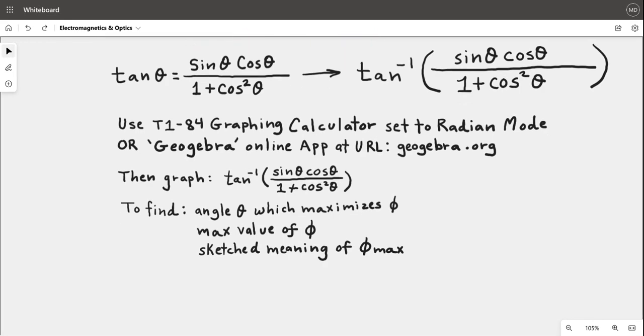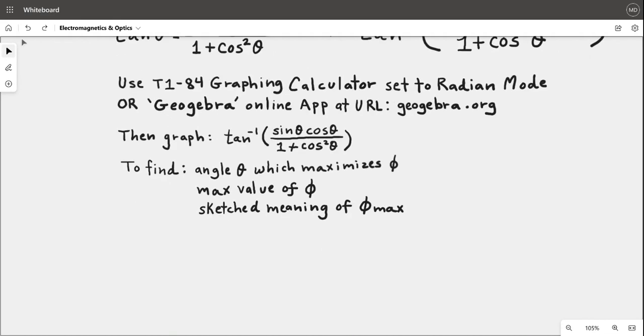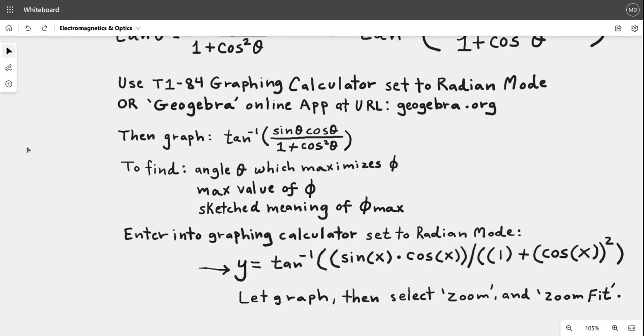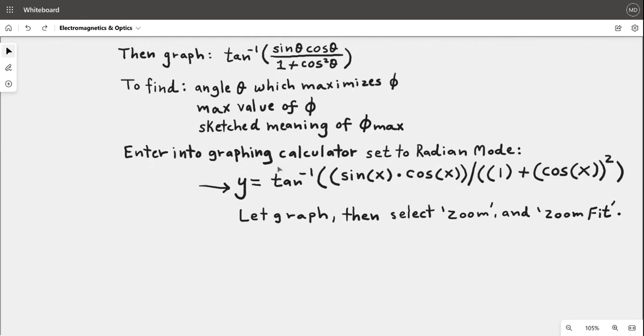To graph the inverse tangent function and find the angle which maximizes phi, that would be the radian equivalent to that degree with respect to the amplitude. Go ahead and find the angle which maximizes phi, which is the theta value in radian mode. The max value of phi would be the amplitude, then sketch the meaning of phi max. You can enter into graphing calculator set to radian mode.